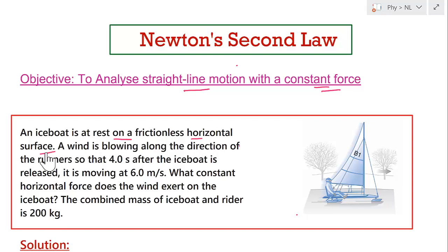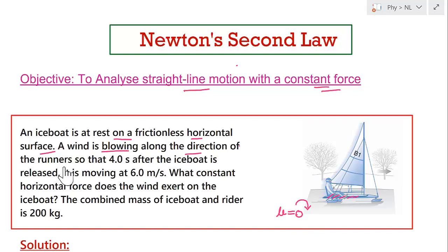An ice boat is at rest on a frictionless horizontal surface, so the friction coefficient is zero in this case. A wind is blowing along the direction of the runner, and this wind will apply a force to the ice boat, causing it to accelerate.